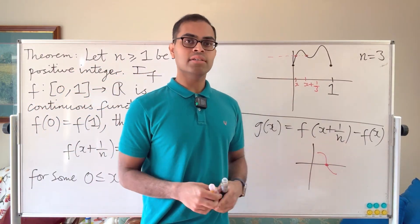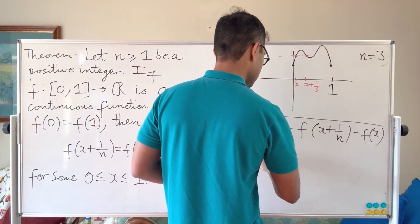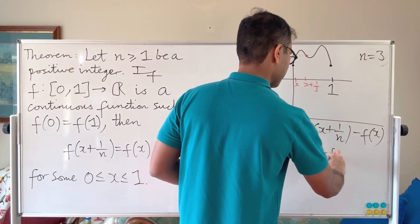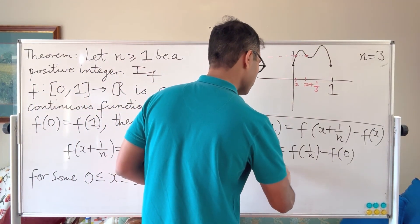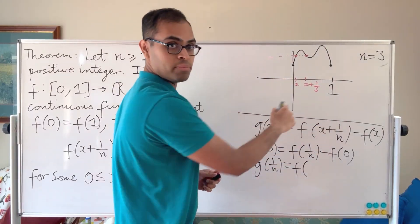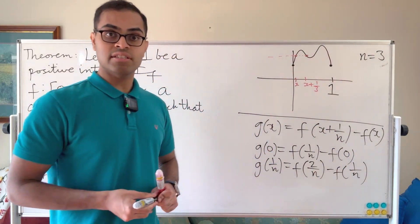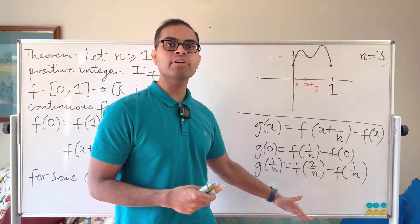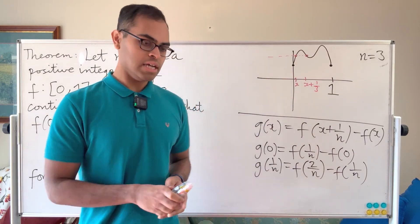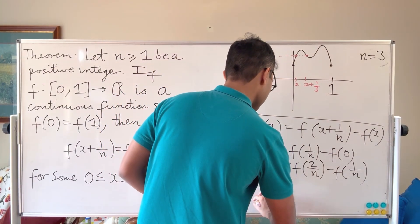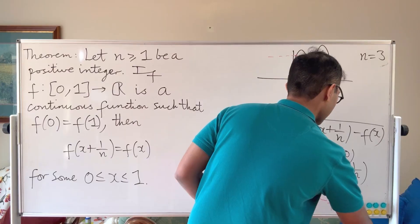So how do we understand the sign of g(x)? Let's look step by step. g(0) = f(1/n) − f(0). Then g(1/n): since 1/n + 1/n = 2/n, we get g(1/n) = f(2/n) − f(1/n). These are successive differences of f. We can keep going, and finally g((n−1)/n) = f(1) − f((n−1)/n).